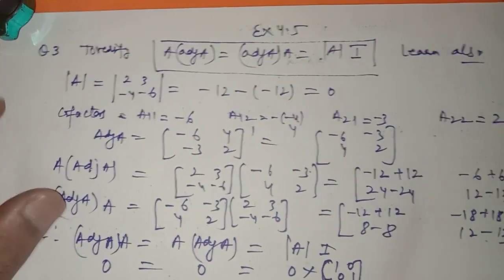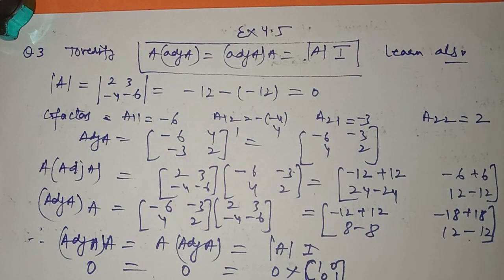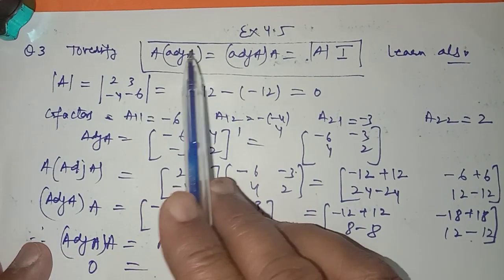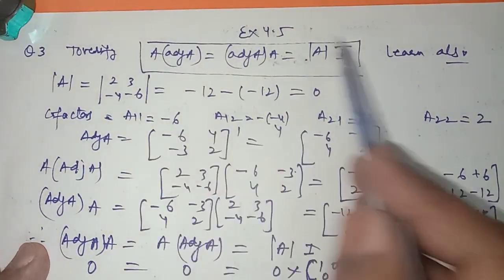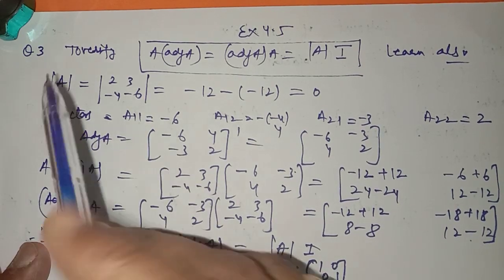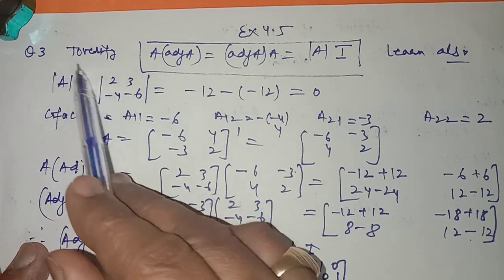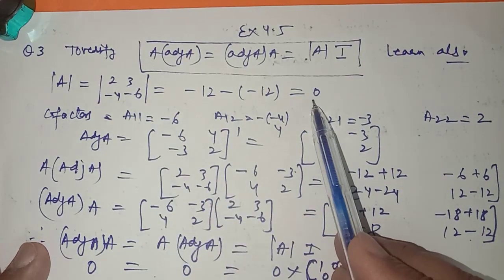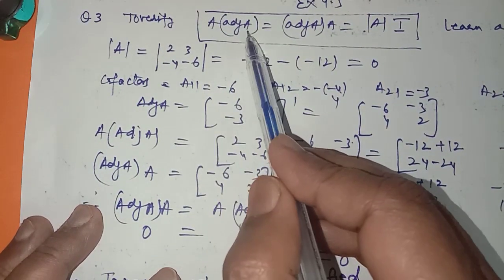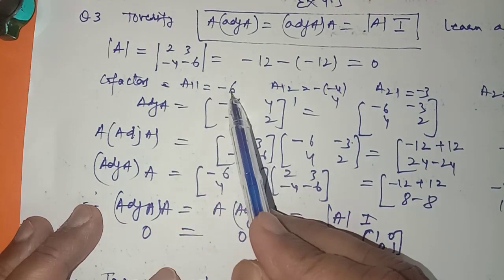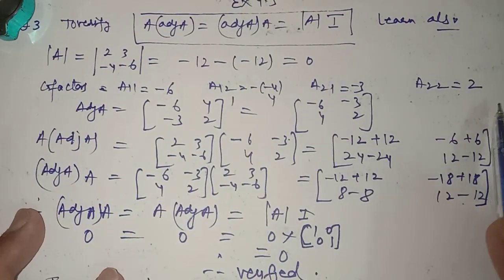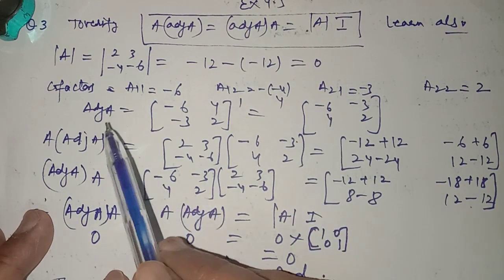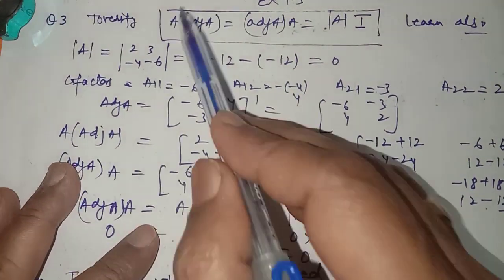In Exercise 4.5, the first two questions ask you to find the adjoint of a 2x2 or 3x3 matrix. In question 3 you have to verify that A × adj(A) = |A| × I. You can get a one-mark numerical question on this. Find the determinant of the given matrix, then find the cofactors — for example, the cofactor of 2 is -6 — following the positive-negative sign pattern. Then find the adjoint as the transpose of the cofactors, and compute A × adj(A) to verify.